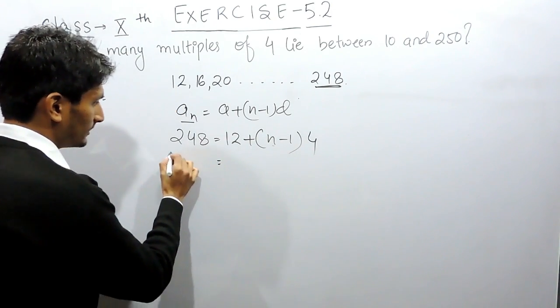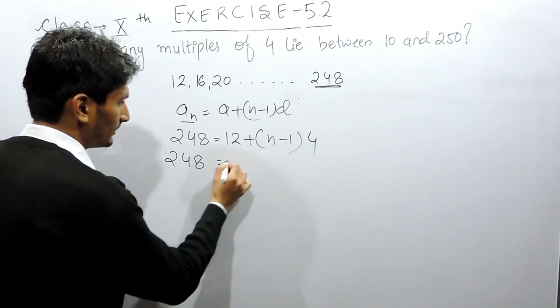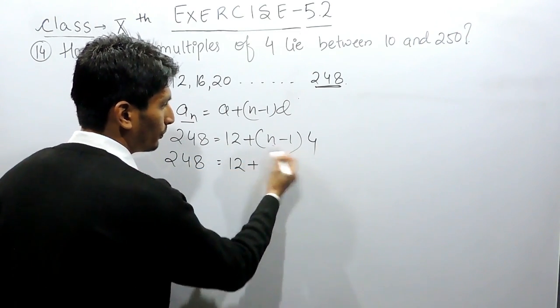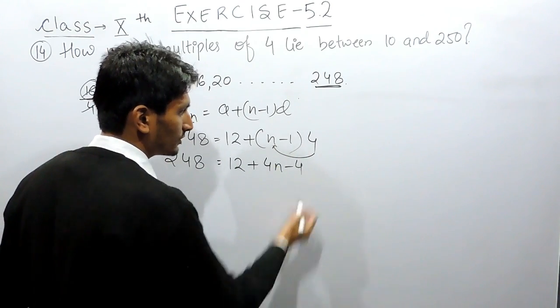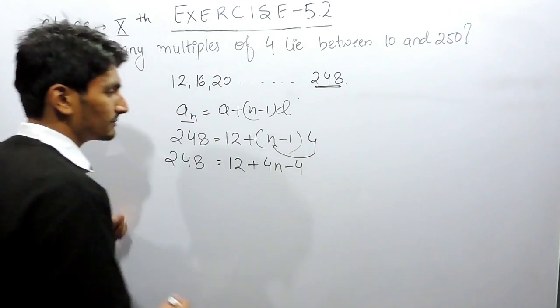Now you can solve this. This is 248. This is 12. Now you have to open the bracket. So for that, you have to multiply 4 with n as well as with 1. So 4 multiplied by minus 1 is minus 4.